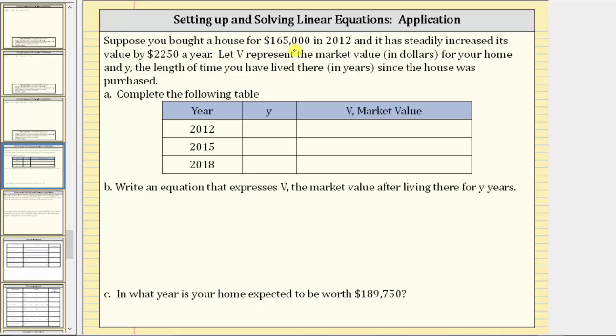Suppose you bought a house for $165,000 in 2012 and it has steadily increased its value by $2,250 a year. Let V represent the market value in dollars for your home and Y the length of time you have lived there in years since the house was purchased.